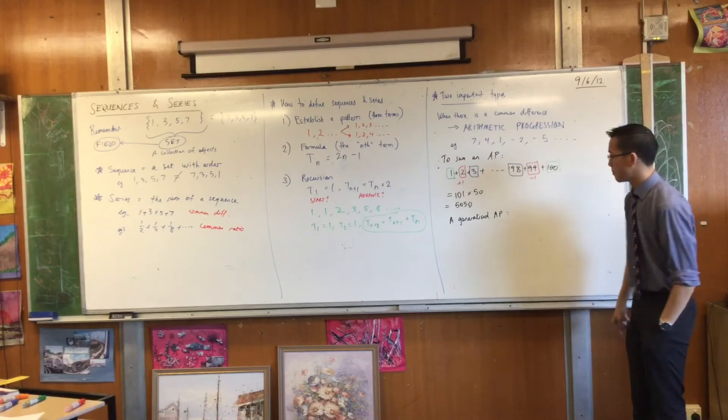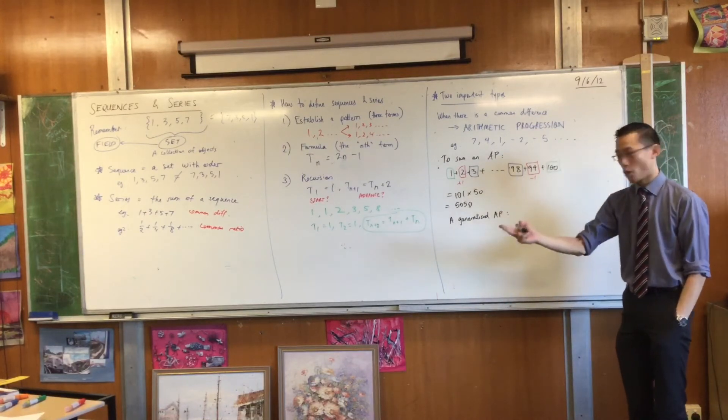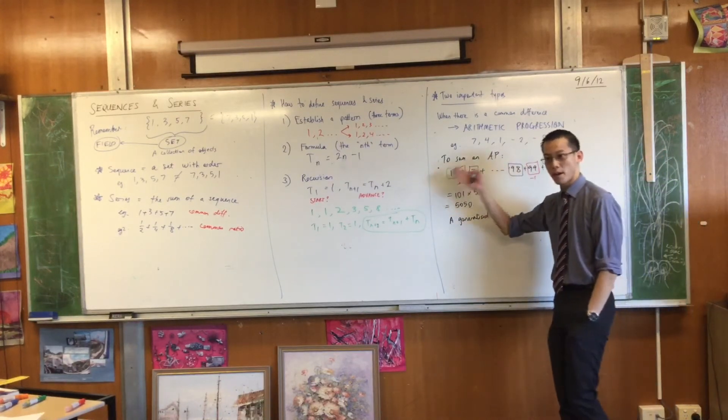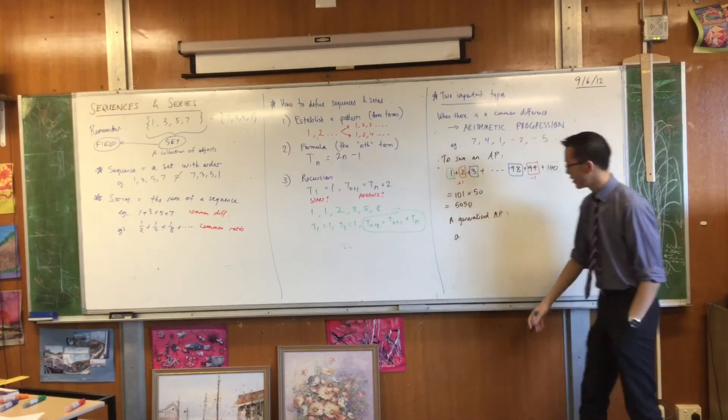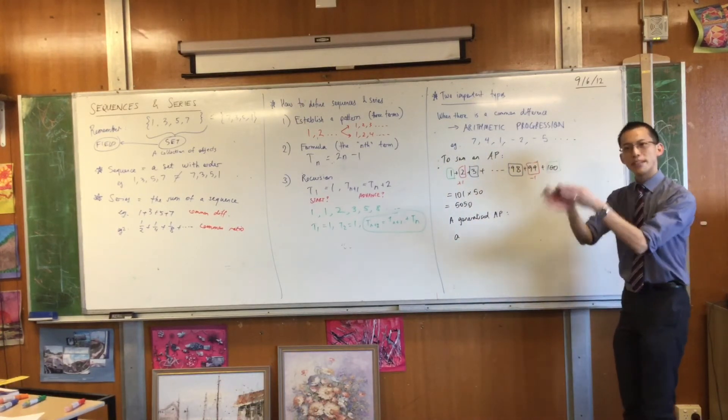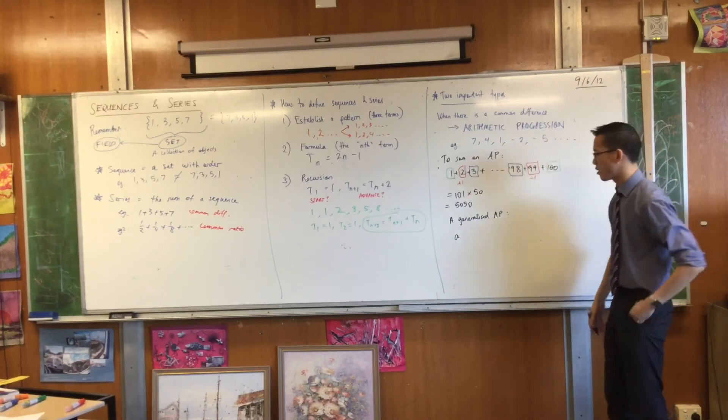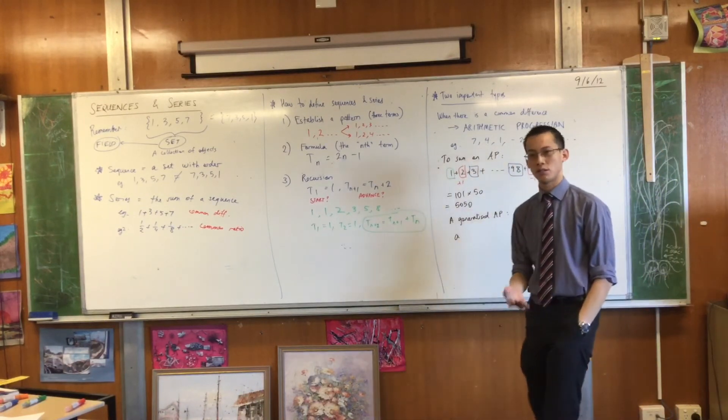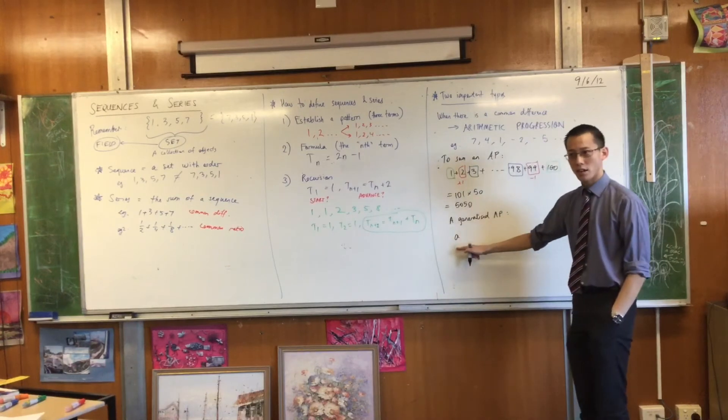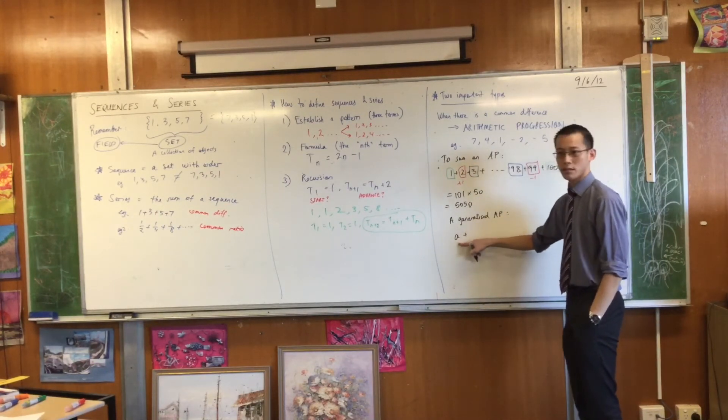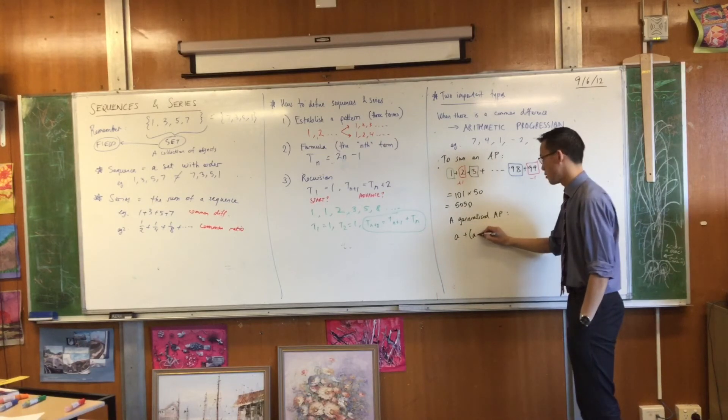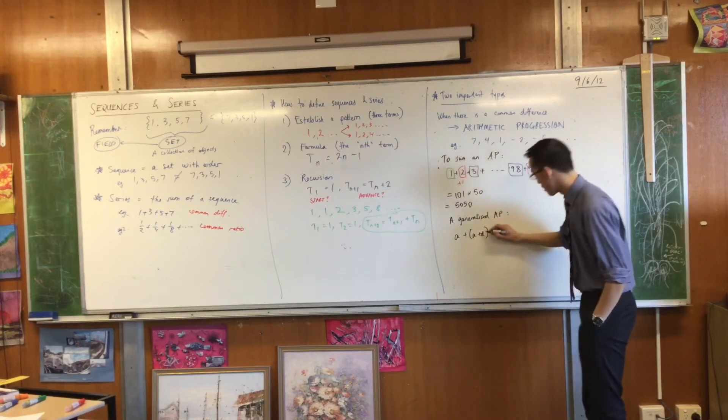There are only two numbers you need. You need a starting point, which since it's the first number, let's use the first letter in our alphabet to denote it, A. And then you need to know the common difference that gets you from one to the next. So, since it's a difference, it's called D for difference. If A is the first term, what's the second term? It will just be this, plus your common difference. Do you agree? That's it.